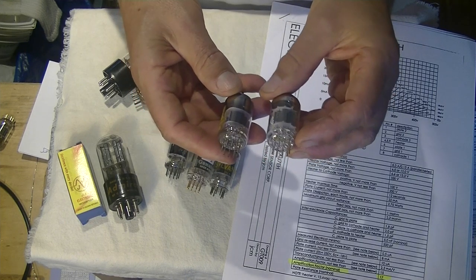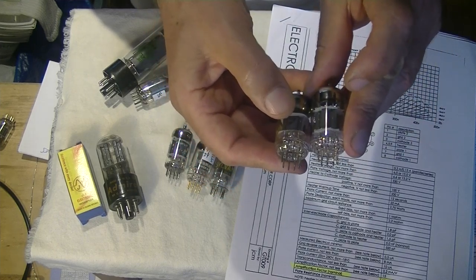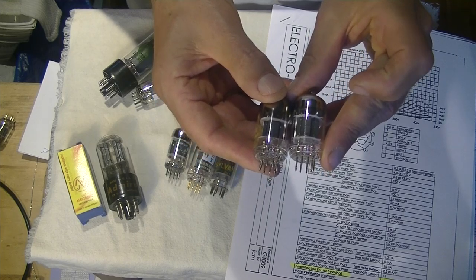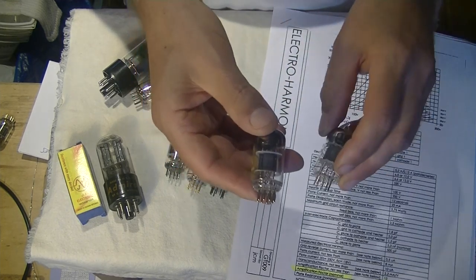But when you get to know tubes, you'll realize when you look at it, maybe you can see it here, this is a big flat plate. And this is more of a bumped rib plate. You'll be able to recognize, oh, that looks a lot like a 12AU7.